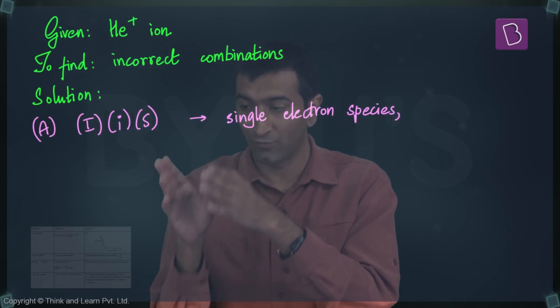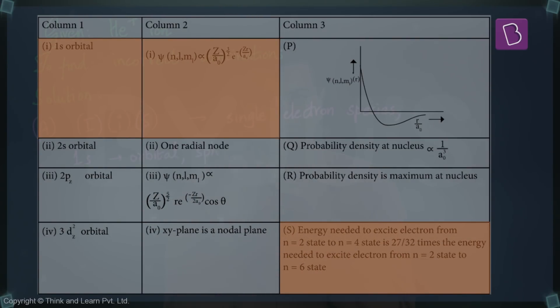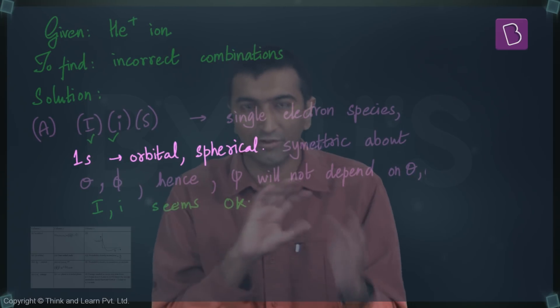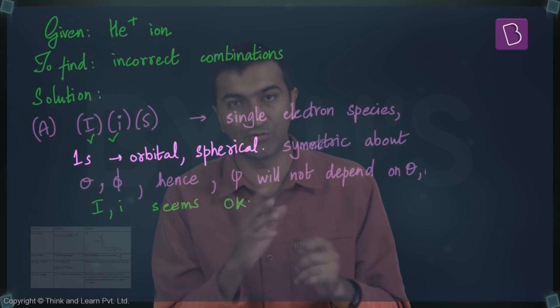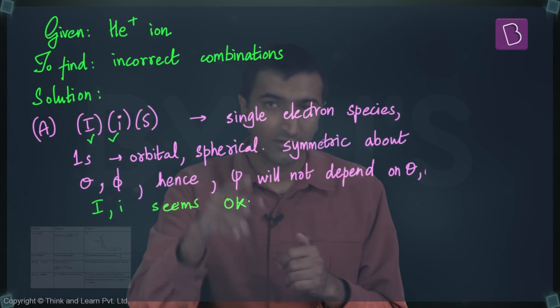This is basically saying that 1s would match with this equation, right? This ψ dependent on some things like e to the power something, and you have a Z and an a₀ and an r. The important thing to notice is what is not here: theta and phi are not here, which means that this function is going to be symmetrical about theta and phi. That's a hint right there. The functions that have that would basically mean that this orbital is spherical, so it looks like 1s could match with this.